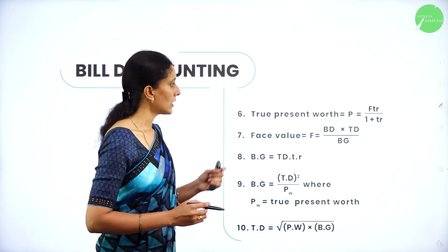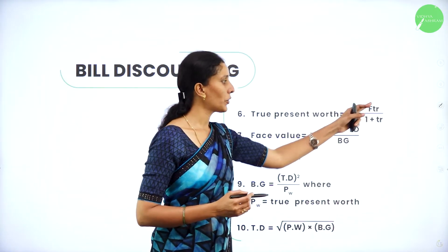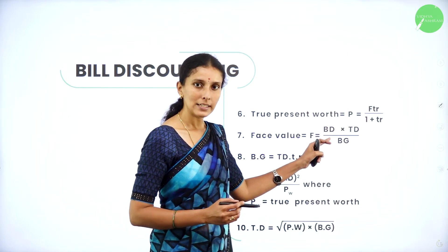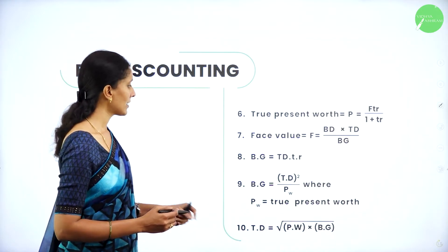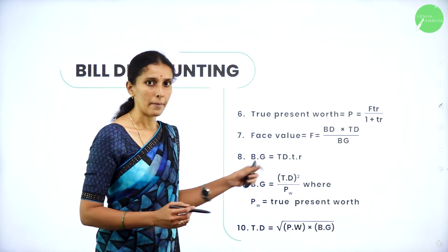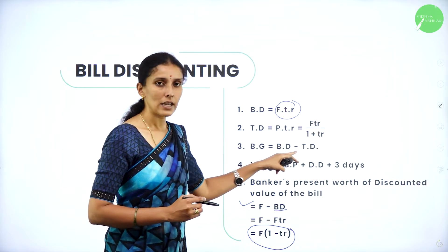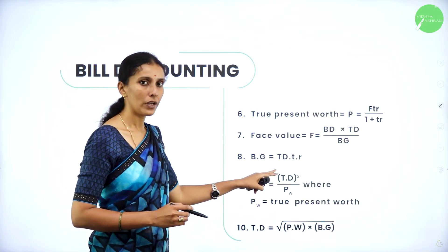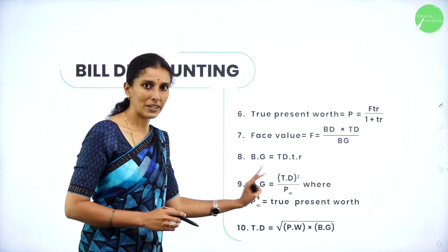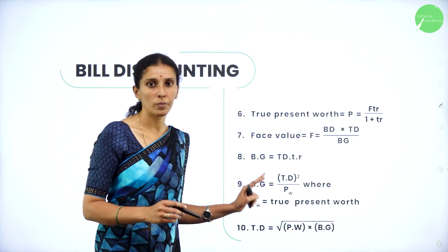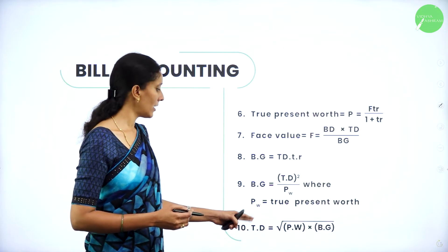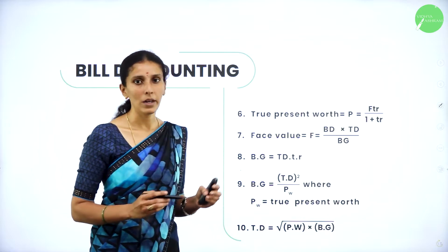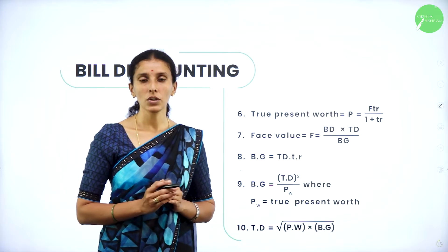True present worth: P = F ÷ (1 + TR). Face value = (BD × TD) ÷ BG. Banker's gain can also be written as TD × T × R, or as BD − TD. One more formula for banker's gain: TD² ÷ PW, where PW is the true present worth. True discount can also be calculated as √(PW × BG). These are all the formulas used to calculate any term related to bill discounting.